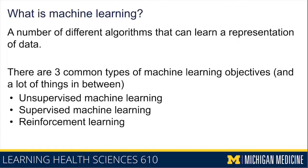When people try to learn a representation of data, they typically have some kind of an objective in mind. The three most common types of machine learning objectives are unsupervised machine learning, supervised machine learning, and reinforcement learning. We'll talk through each of these and discuss the overall goal of each different type.